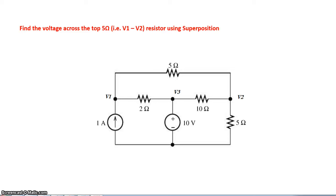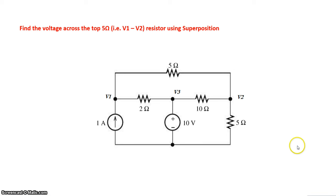In this example we will look at how to calculate the voltage across a resistor using the concepts of superposition. Here's a circuit with a current source of 1 amp and a 10 volt voltage source. Our goal is to find the total voltage drop across this 5 ohm resistor.